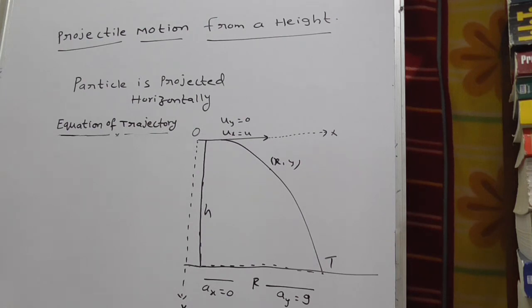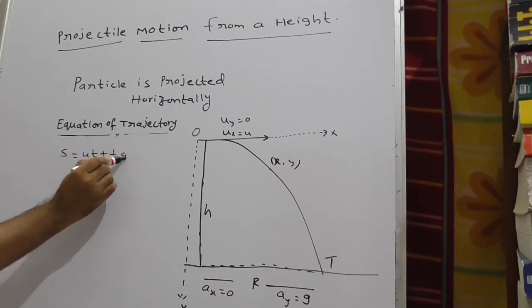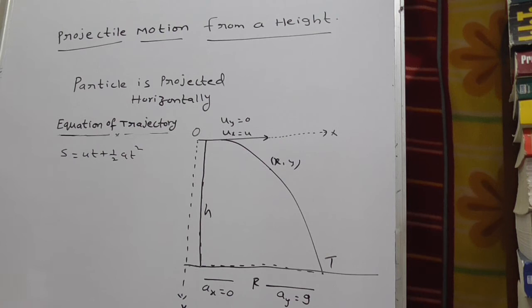This equation of trajectory gives the relation between x and y. Now, by using s is equal to ut plus half at squared, we are going to prove this. First take with respect to the x axis. That is sx equals uxt plus half axd squared.